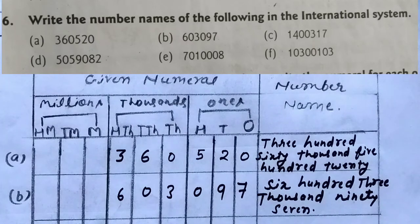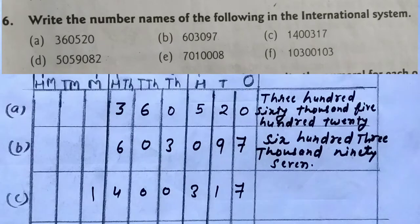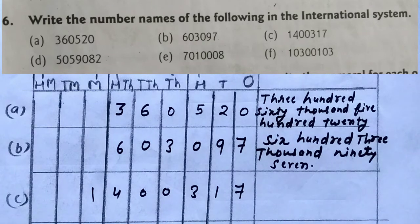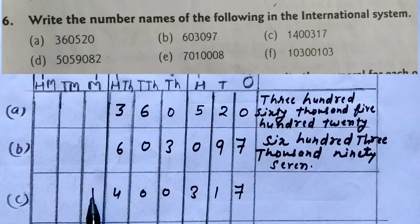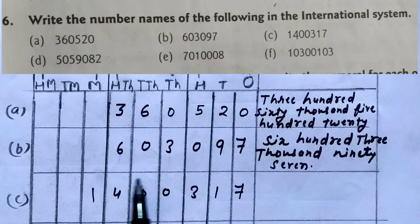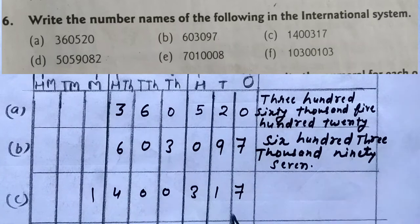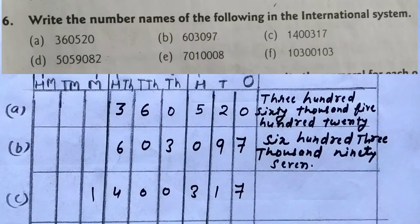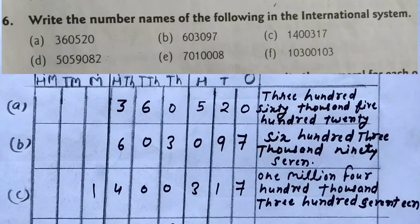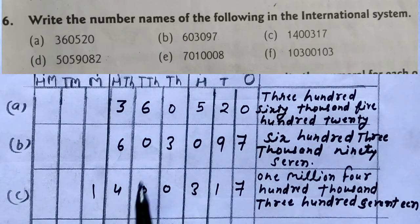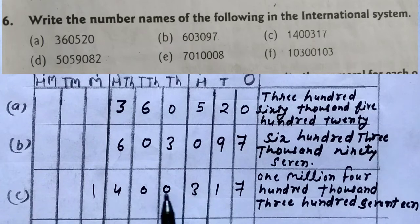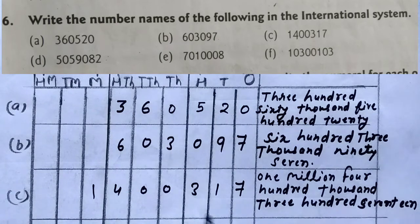Again we will place. We will see question number C. 1 is in millions period. So we will write 1 million. In thousand period what is written? 400. 400,317. 1 million, in thousand period what is written? 400. 400 thousand, 400 thousand, and 317.